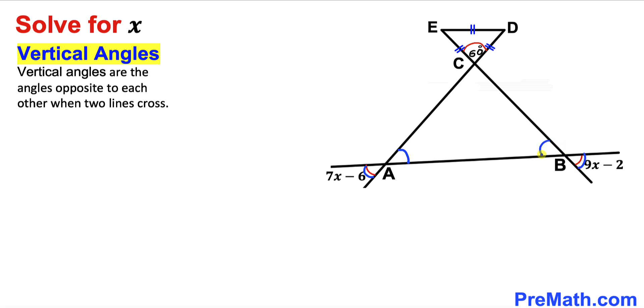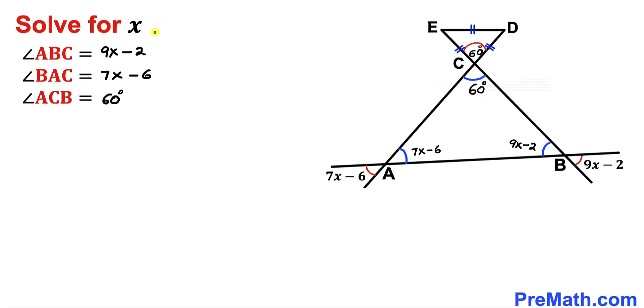Finally, this angle is going to be 7x minus 6, this angle is going to be 9x minus 2, and this angle is going to be 60 degrees. Therefore, angle ABC turns out to be 9x minus 2, angle BAC is 7x minus 6, and finally angle ACB is 60 degrees.